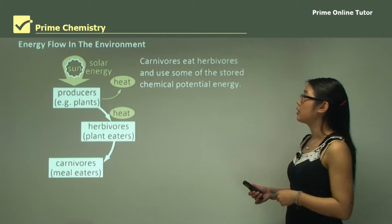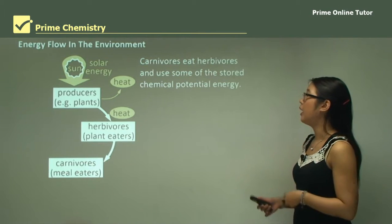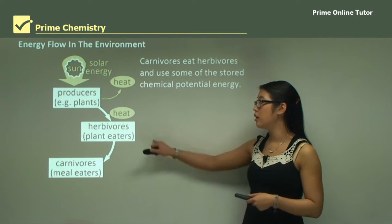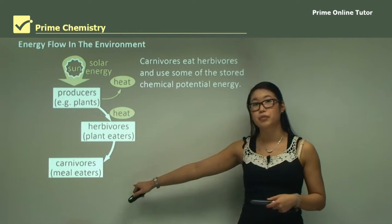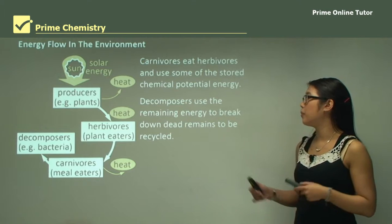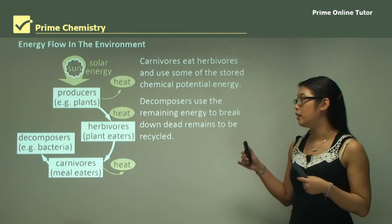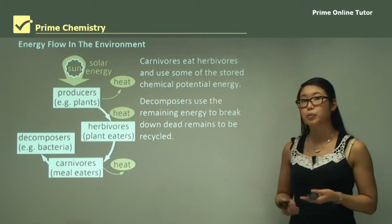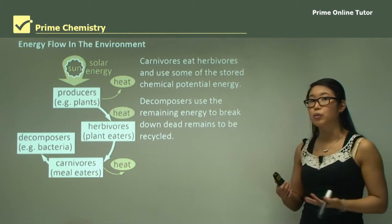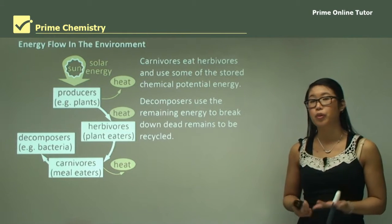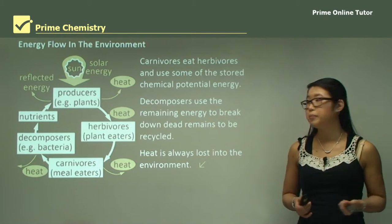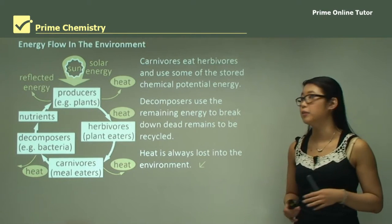Carnivores eat herbivores and use some of the stored chemical potential energy in the herbivores for themselves. Decomposers then use the remaining energy in carnivores that have died, breaking them down and recycling all the nutrients. Heat is always lost into the environment from every part of the cycle.